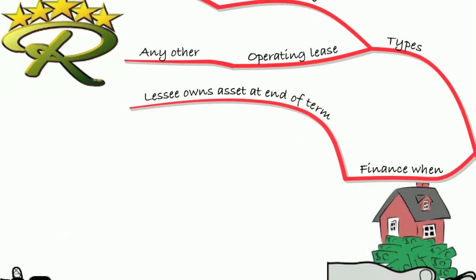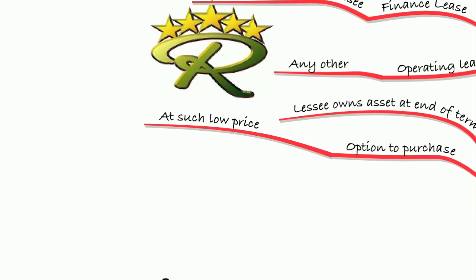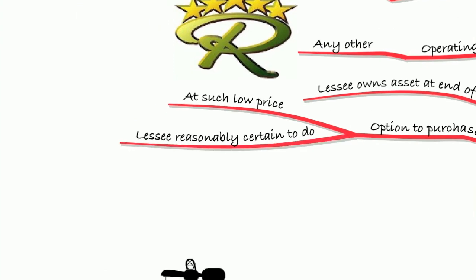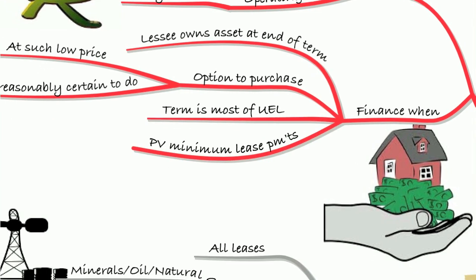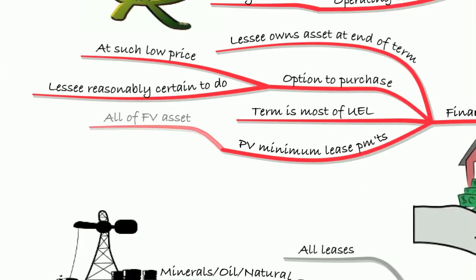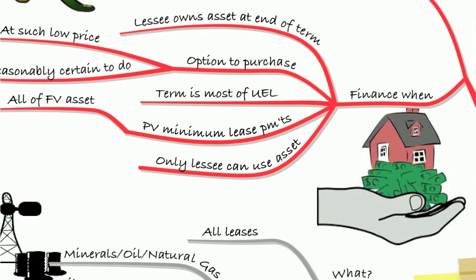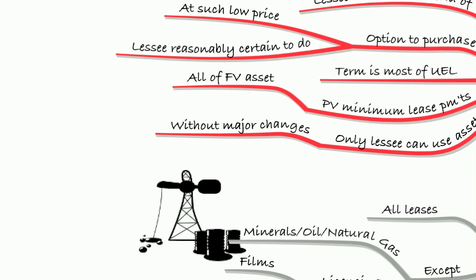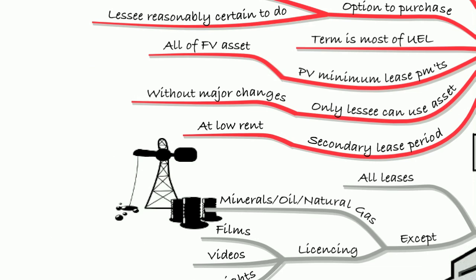The criteria for a finance lease are: if the lessee owns the asset at the end of the term; if there's an option to purchase at such a low price that the lessee is reasonably certain to do so; if the term is most of the useful economic life of the asset; if the present value of the minimum lease payments makes up all of the fair value of the asset; if only the lessee can use the asset without major changes; or if there's a secondary lease period at such a low rent. If none of these criteria are met, it will be an operating lease.